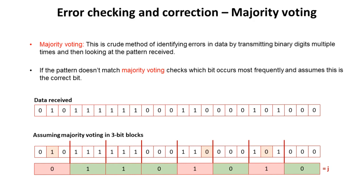Now majority voting. This is a crude method of identifying errors in data by transmitting binary digits multiple times and then looking at the pattern received. If the pattern doesn't match then we use the majority rule to check which bit occurs most frequently and we just assume it's the correct bit.